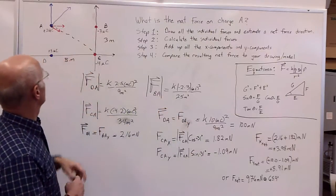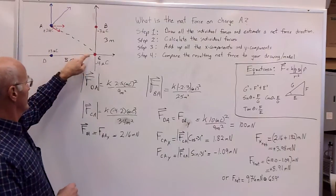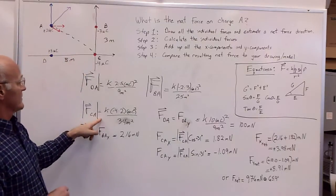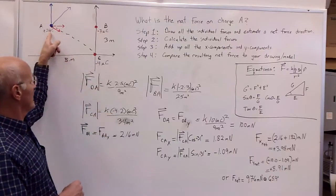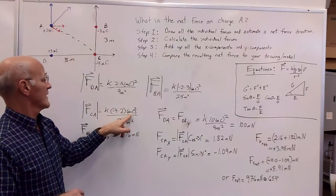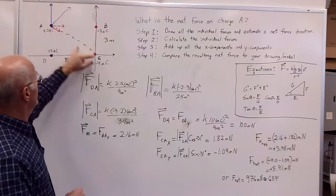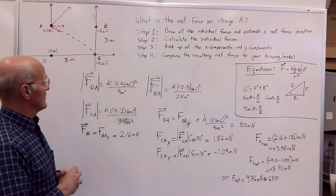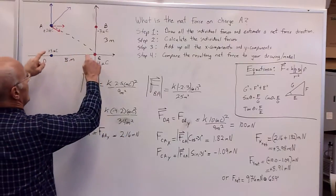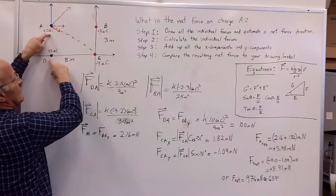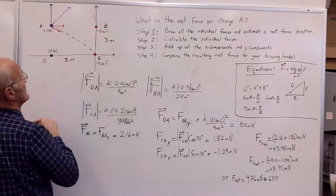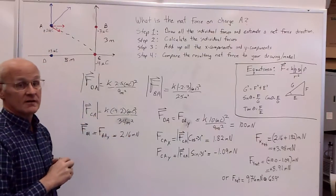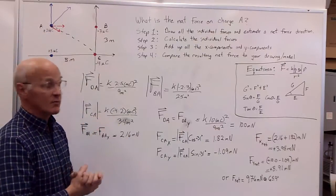And finally, the last one is the force on A due to charge C, and I did that down over here, and so that's another K times now negative 4 times positive 2, and again, microcoulombs squared, and now the distance here, it turns out to be 34 meters squared, because it's A squared plus B squared, equals C squared, so 5 squared plus 3 squared gives me 34 squared, no need to take a square root at this point.